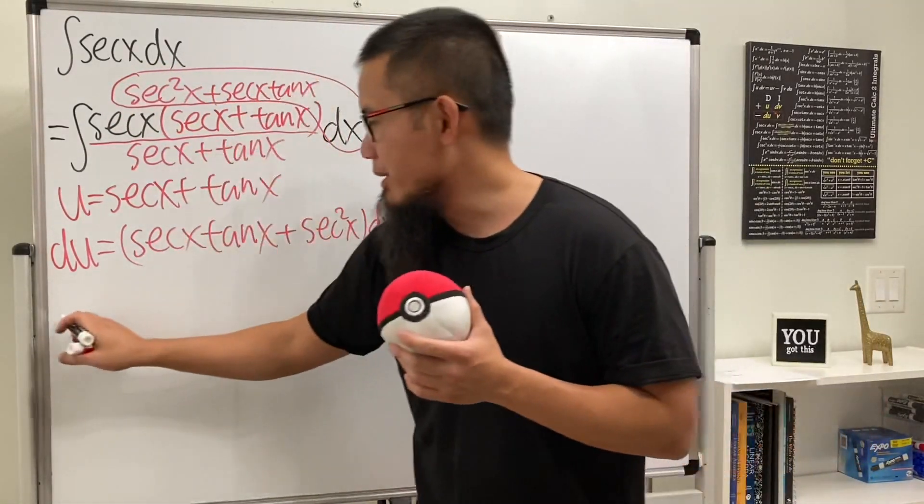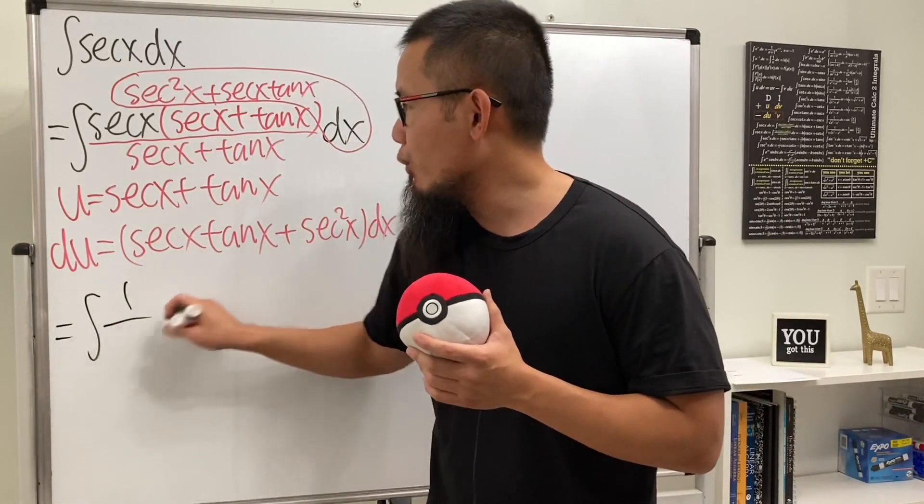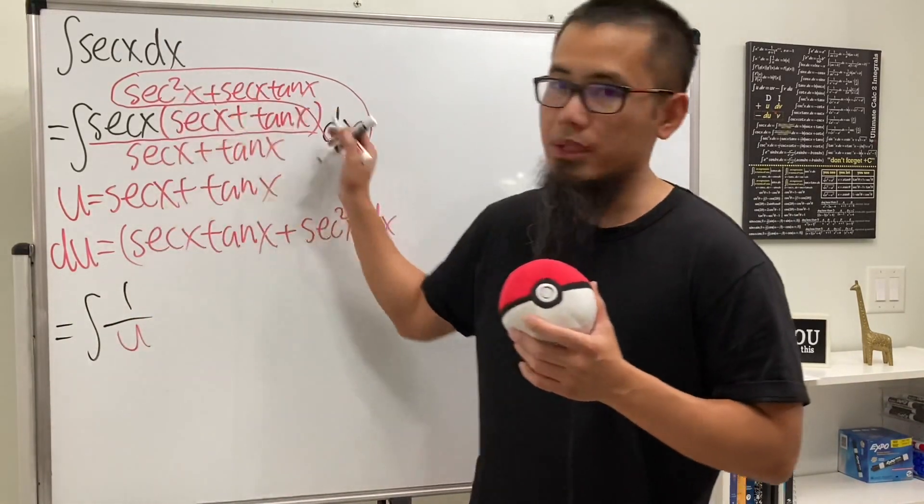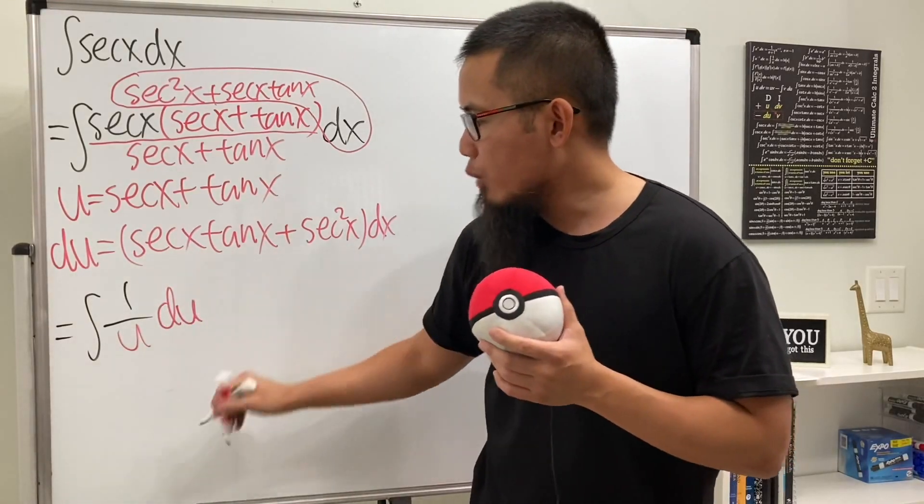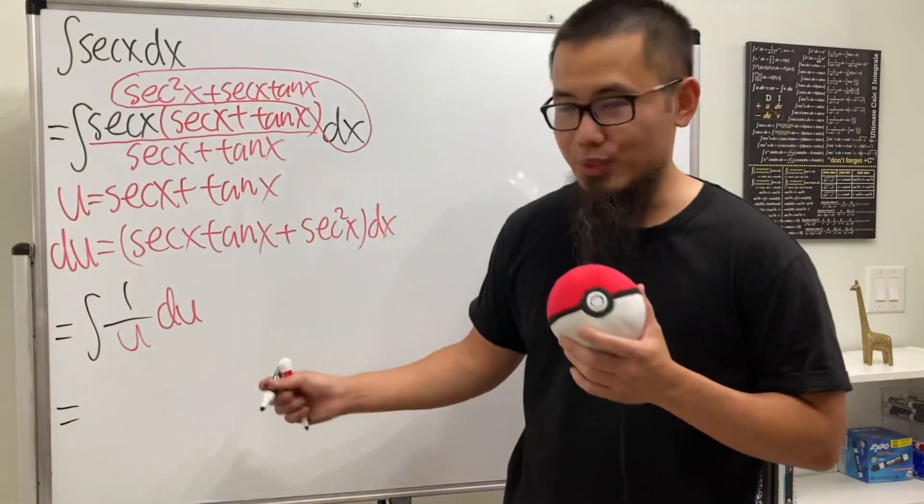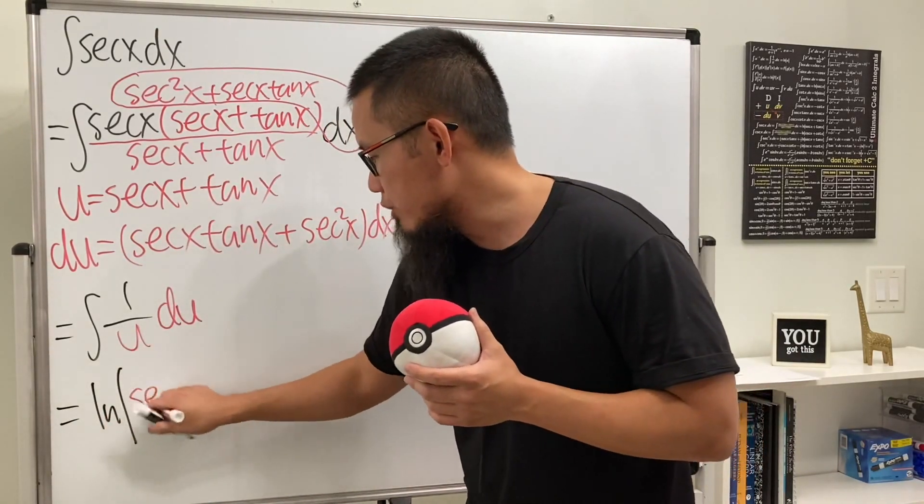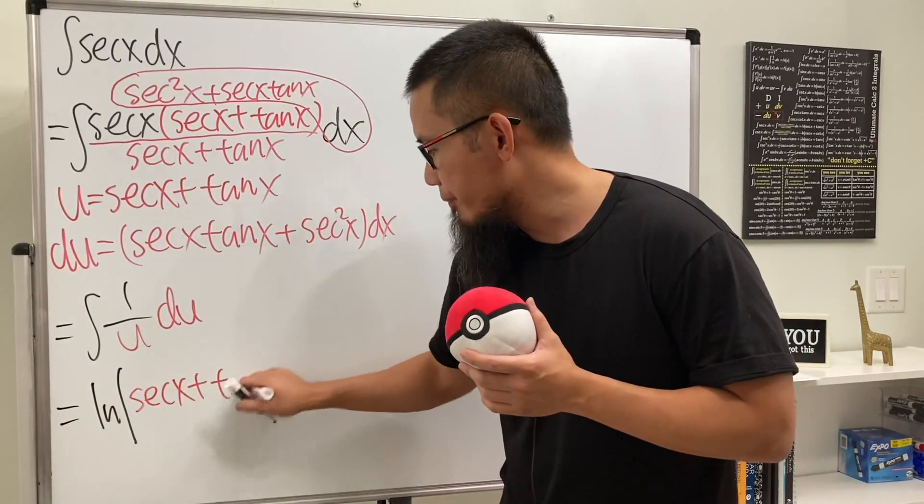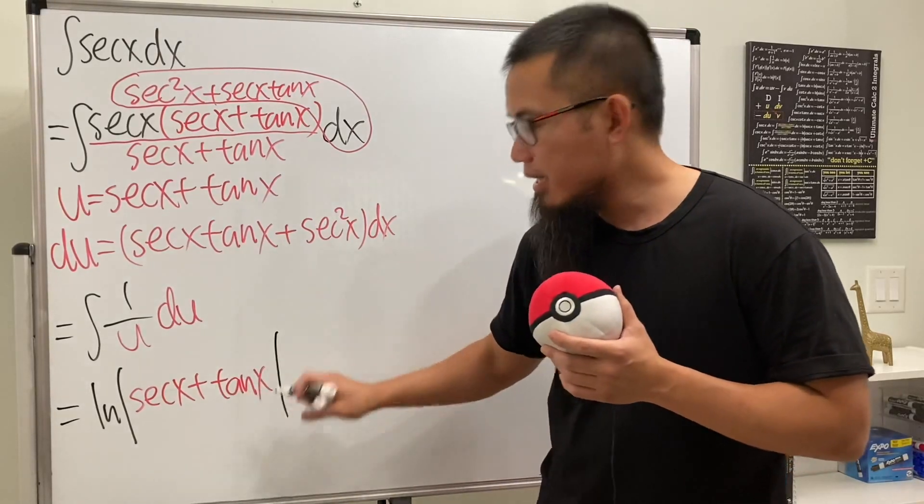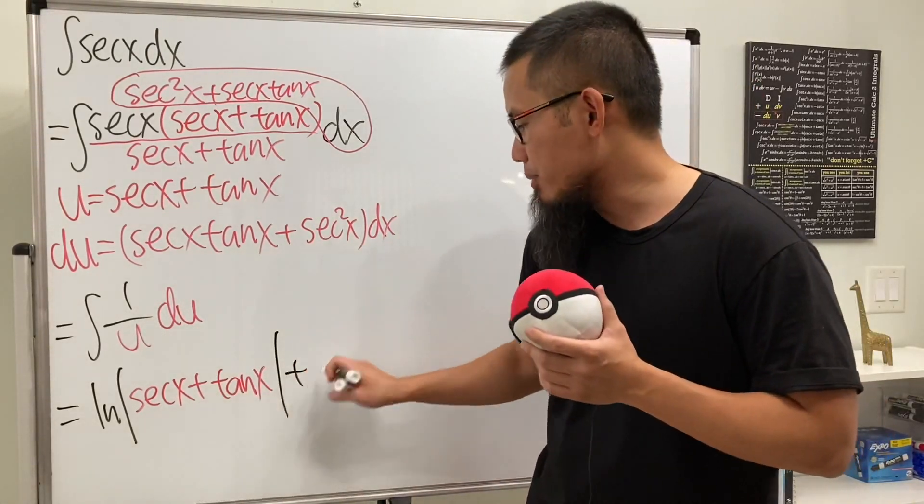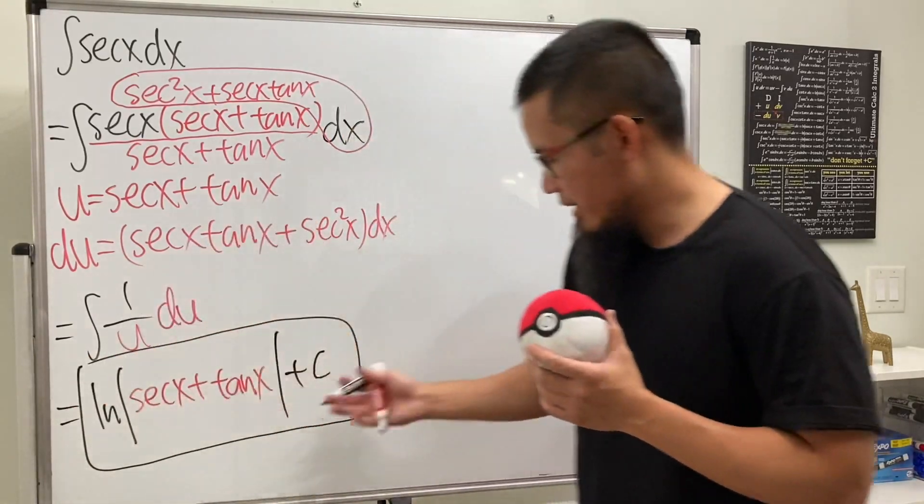So this integral is just nicely equal to 1 over u, and then we can put the du on the side right here. And when we integrate this, we just get natural log absolute value of u, which is that. And we can just put down secant x plus tangent x, and we are all done after we put down the plus C. This right here is it.